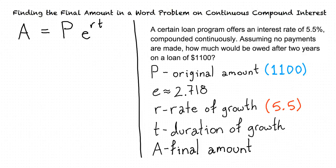Not quite, but you're on the right track. R equals 5.5%, but in order to use that number in our problem, we need to convert that percent to a decimal. To convert a percent to a decimal, divide it by 100. 5.5 divided by 100 is 0.055. So R equals 0.055.